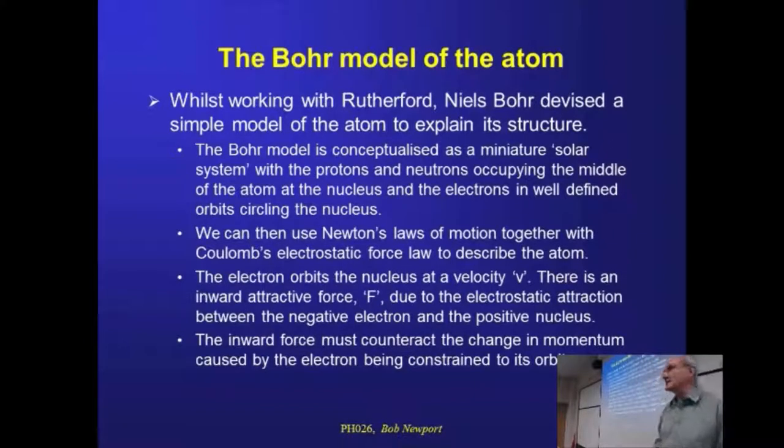So all he really needed to do was to balance a couple of forces. These are stable orbits, if you like. Unless we put additional energy in, they don't change. Which means that the attractive force, the electrostatic force between our negative electron and our positive nucleus must be balanced by something. And it's balanced, of course, by the fact that these things are moving around in a circle. So there is a centripetal force. This is like a spin dryer, throwing the water to the outside of the drum.